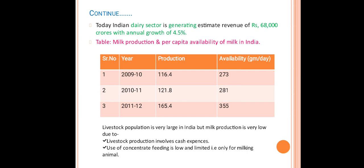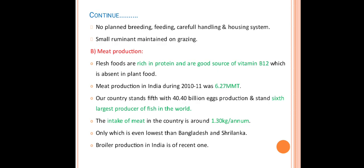The livestock population is very large in India but milk production is very low because of various reasons. First, livestock production involves cash expenses, requiring expenditure for developing the livestock sector. Use of concentrate feeding is low and limited — farmers are not feeding concentrate to poor milking animals. There is also no proper plant breeding, feeding, careful handling and housing system.